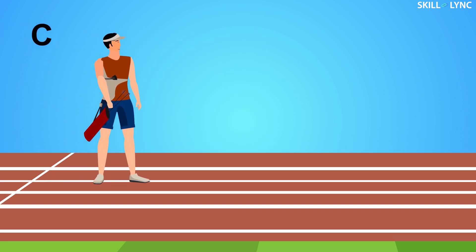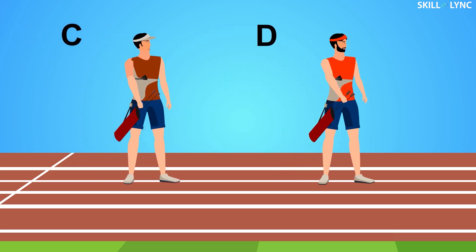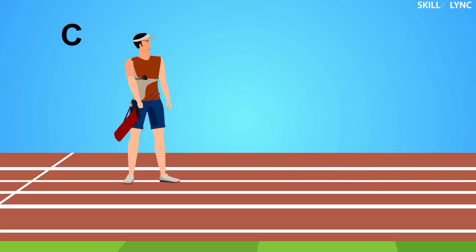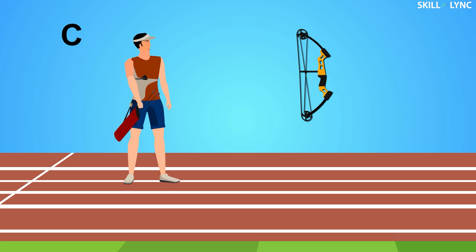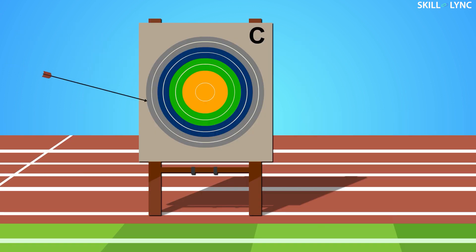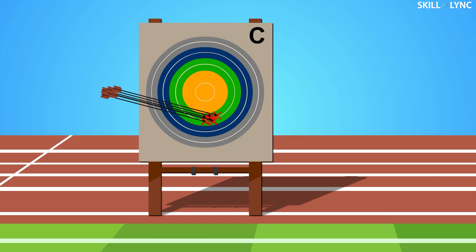Next, C and D come over to the stand for their round. Just like B, C is also an expert marksman who has many years of experience. But he was very unlucky — his bow was bent slightly, which led him to miss all the shots. Due to the fault in his bow, all his shots were away from the center.